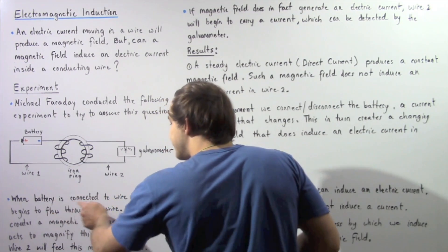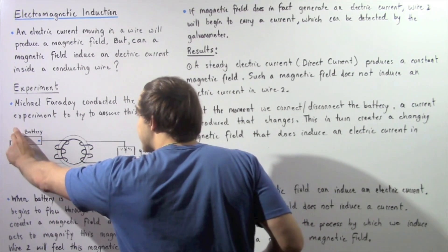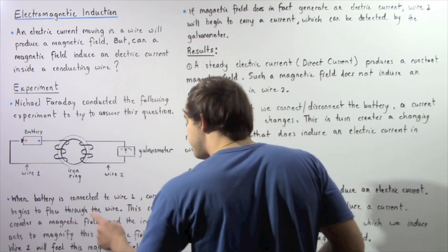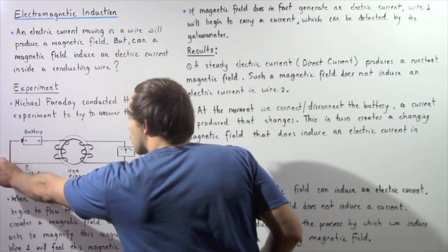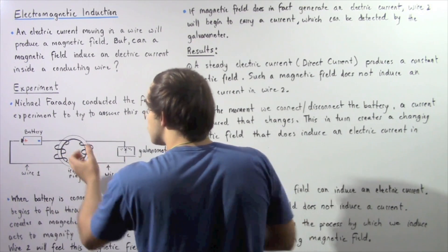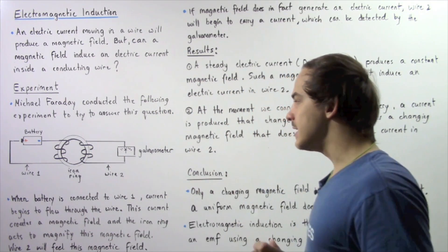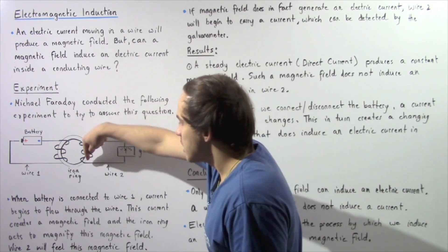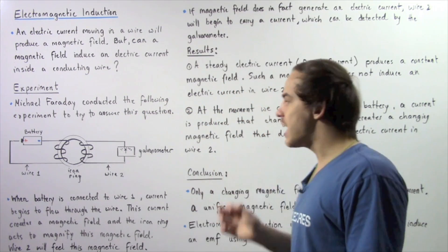When the battery is connected to wire number one, an electric current begins to flow through wire number one from the positive electrode to the negative electrode. This moving electric current creates a magnetic field, and the iron ring magnifies that magnetic field so that wire number two feels it. If a magnetic field does in fact induce an electric current, then a current will begin to flow through wire number two and the galvanometer will be able to pick it up.